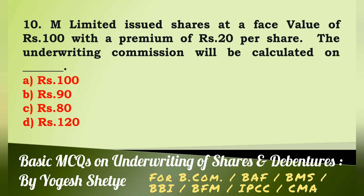Question 10: M Limited issued shares at a face value of rupees 100 with a premium of rupees 20 per share. The underwriting commission will be calculated on — (a) rupees 100, (b) rupees 90, (c) rupees 80, (d) rupees 120. Answer: The underwriting commission will be calculated on issue price, that is rupees 100 plus premium rupees 20 equals rupees 120.